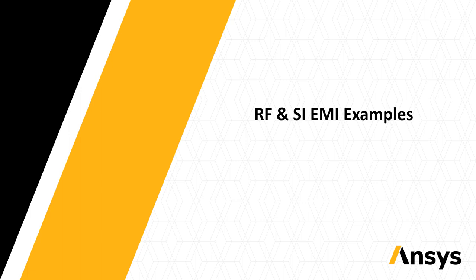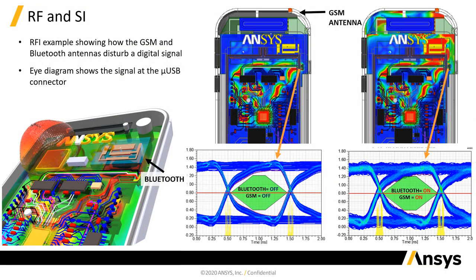We also address the mix between RF, signal integrity, and EMI. In this example, we have a generic cell phone with two antennas — a Bluetooth antenna and a GSM antenna — and a package in the middle of the PCB with a signal going to the USB connector. When the Bluetooth and GSM antennas are off, the eye diagram shows the eye is open. As we turn on the antenna, we run the same signal integrity analysis, and we can see a violation in the eye mask — basically because of interference from the antennas into that particular signal. These simulations require both RF and signal integrity background and are fundamentally electromagnetic interference analyses.